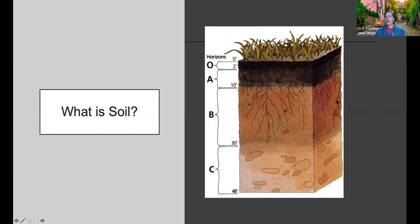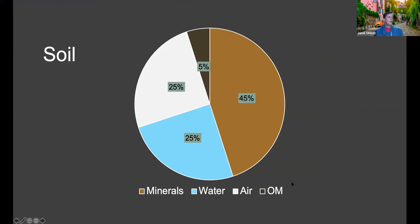This is what a pedon is — the layers: the organic matter at the top, your A horizon, B horizon, and C horizon. An ideal soil has your mineral component, which is the sand, silt, and clay component that makes up that.